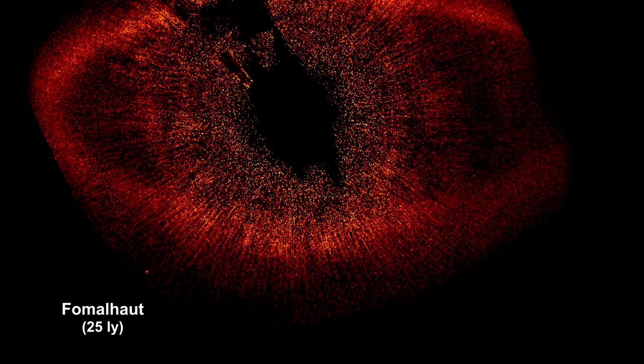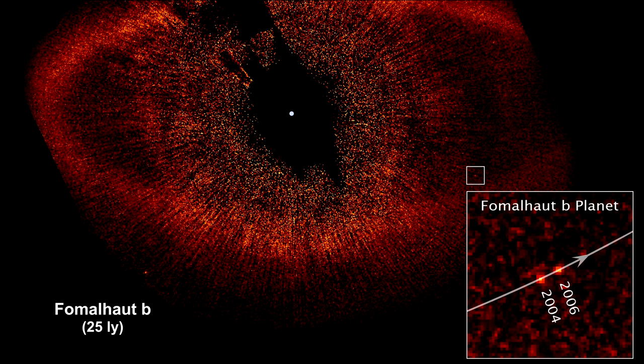The star Fomalhaut is a good example of this process. Its circumstellar disk morphed into a protoplanetary disk with at least one object large enough to be considered a planet, Fomalhaut B.